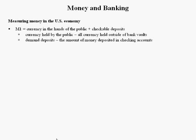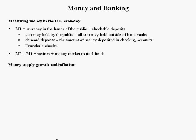Demand deposits is the total amount of money deposited in checking accounts. Travelers' checks are included in M1 — they used to be very popular, not so much today. M2 is defined to be the sum of M1 plus the amount of money in savings accounts plus the amount of money in money market mutual funds.